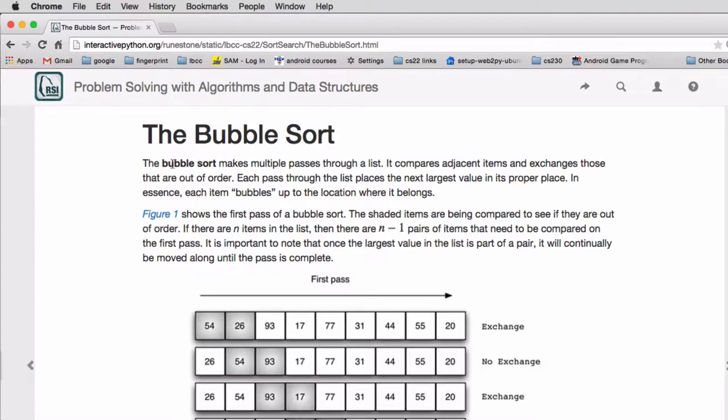So a bubble sort makes multiple passes through a list. It compares adjacent items and exchanges those items that are out of order.